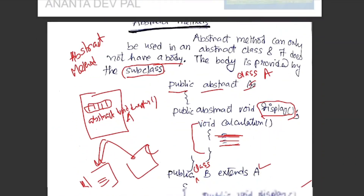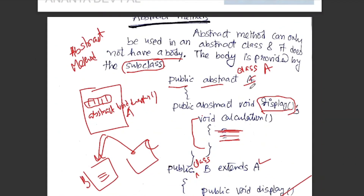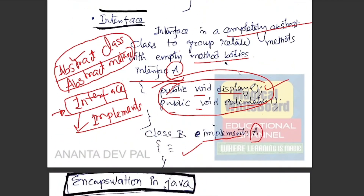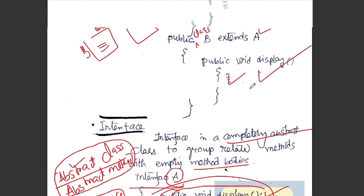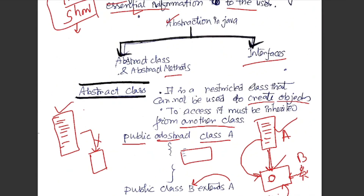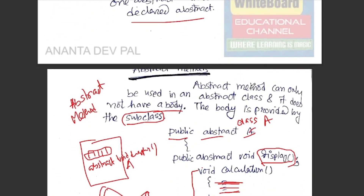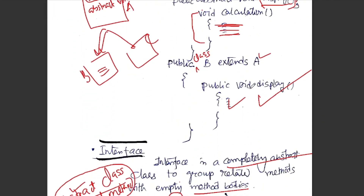We have to use the abstract method. In the interface, it is an abstract method — we have to use the abstract method. This is the concept of abstraction in Java. That was a detailed description.